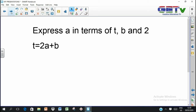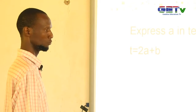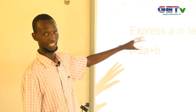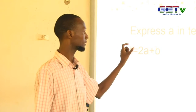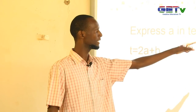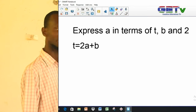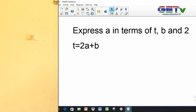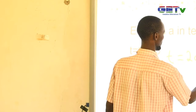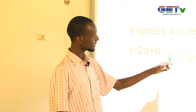Now, express a in terms of t, b, and 2 in the formula t equals 2a plus b. Don't be confused by the language — they are still asking you to do the same thing. That is one way they can ask the question. 'Express a in terms of t, b, and 2' simply means make a the subject. And it means t, b, and 2 will also appear in your answer. We have t equals 2a plus b, and we want to isolate the a.